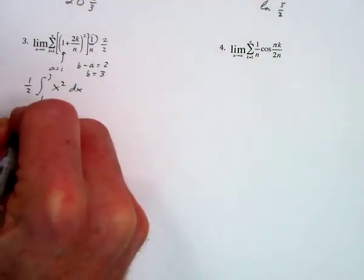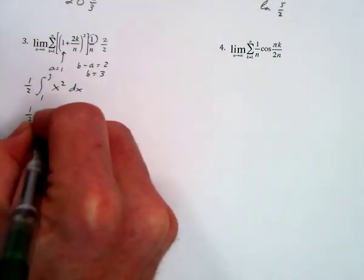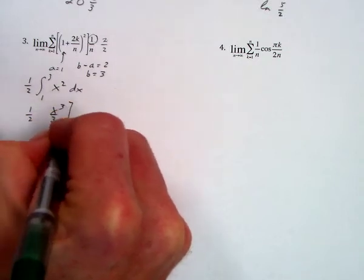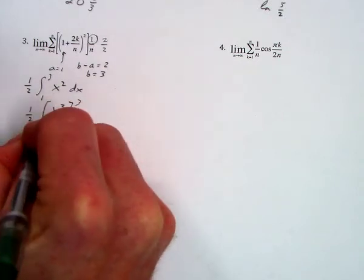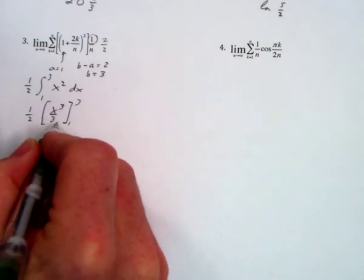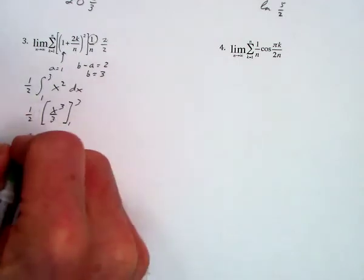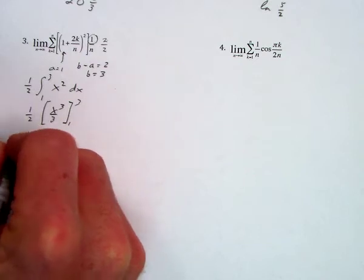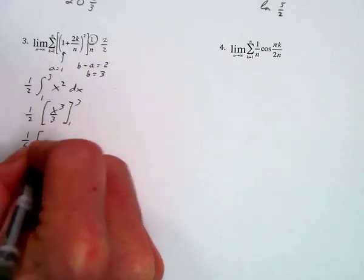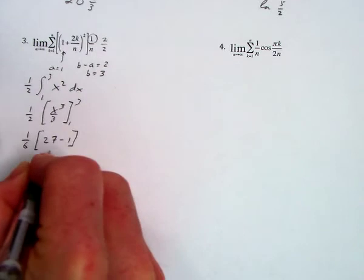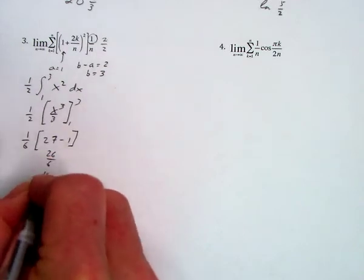When we evaluate this, we get 1 half times x cubed over 3, evaluated from 1 to 3. You can do this multiple ways. If I pull that 1 third out, I'll have 1 sixth, and then 3 cubed will be 27 minus 1. So we get 26 over 6, which is 13 thirds.